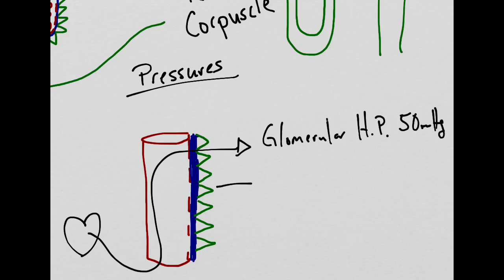Another hydrostatic pressure found here is the capsular hydrostatic pressure, which is a little bit of a backflow from the fluid that's already in the capsule. This pressure is typically around 15 millimeters of mercury.